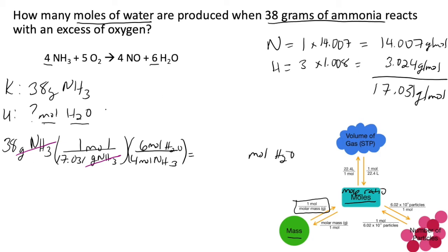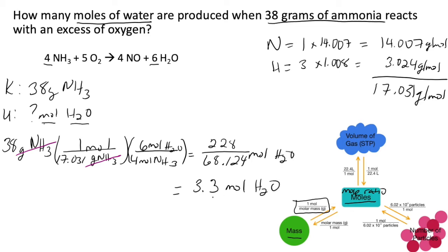Now that we have everything in place, we multiply the numerators, get that answer, and divide by the denominators. 38 times 1 times 6 is 228 at the top, divided by 17.031 times 4, which is 68.124. Then 228 divided by 68.124 gives you 3.3 moles of water. It's 3.3 because we have two significant figures.